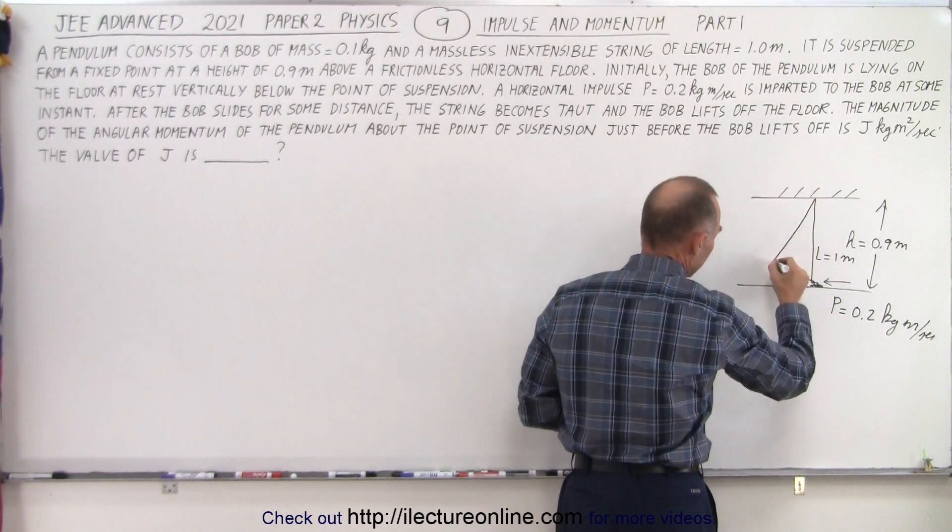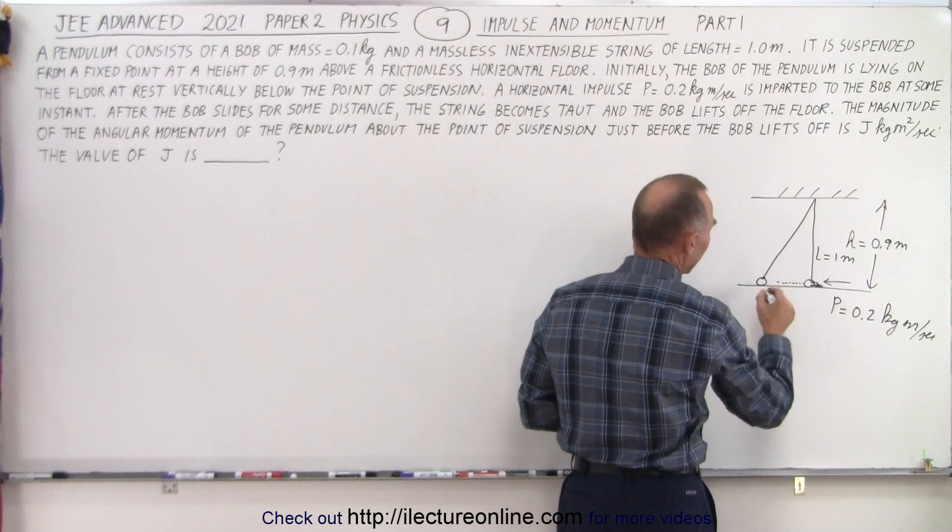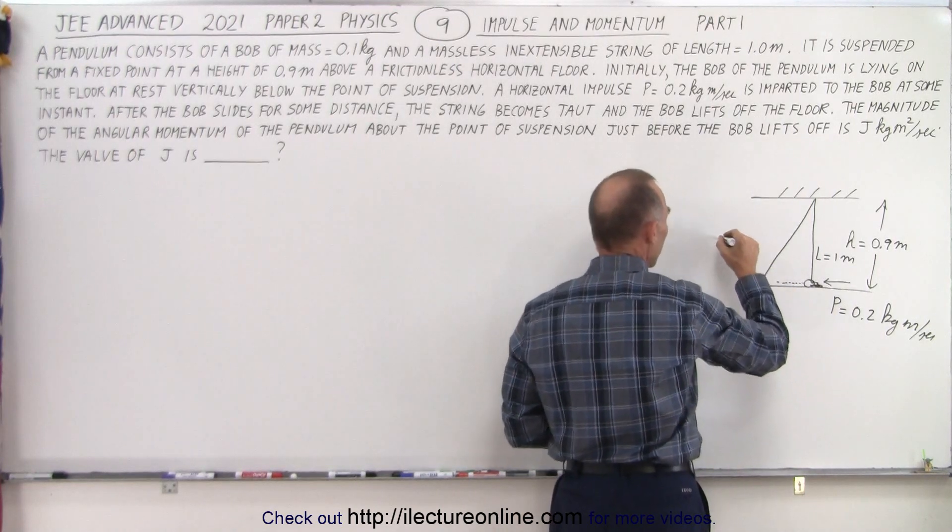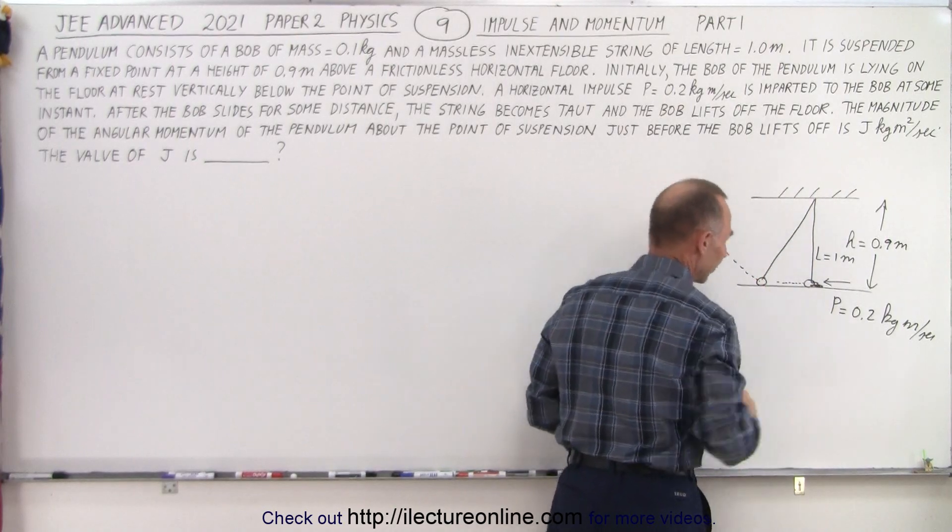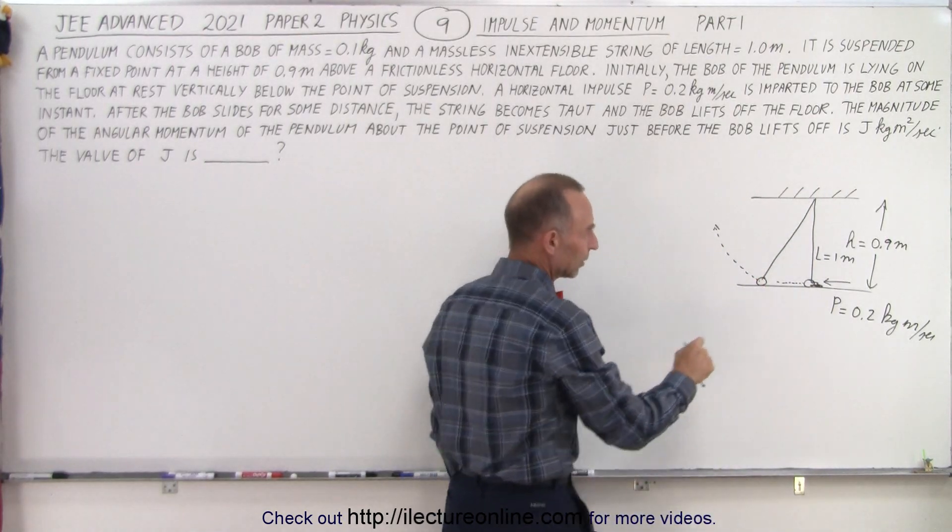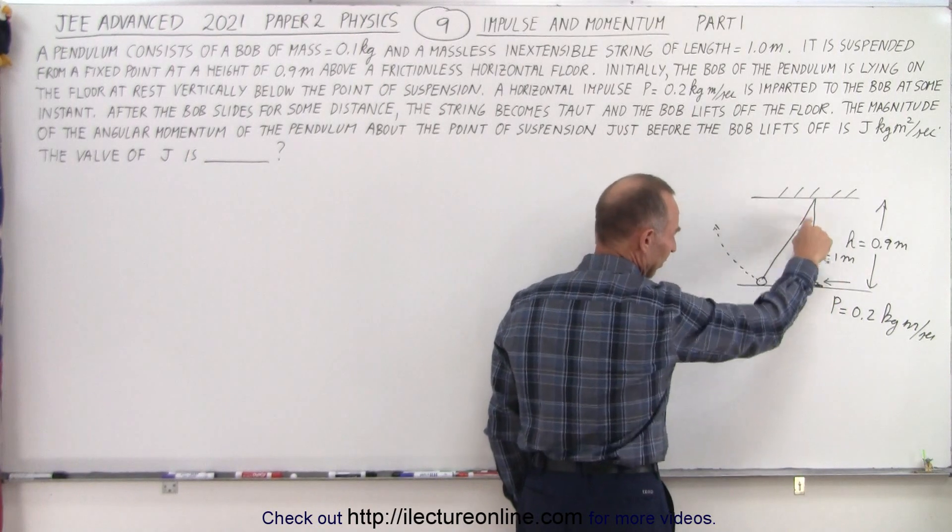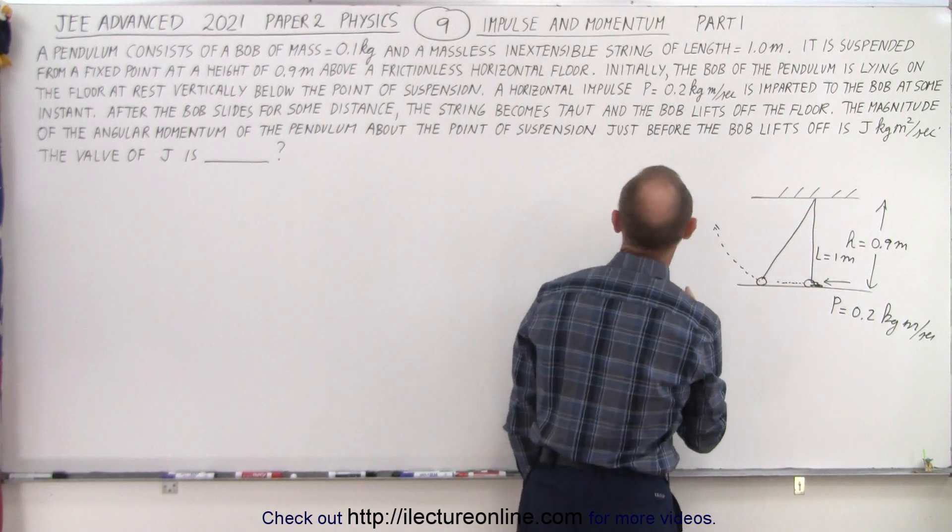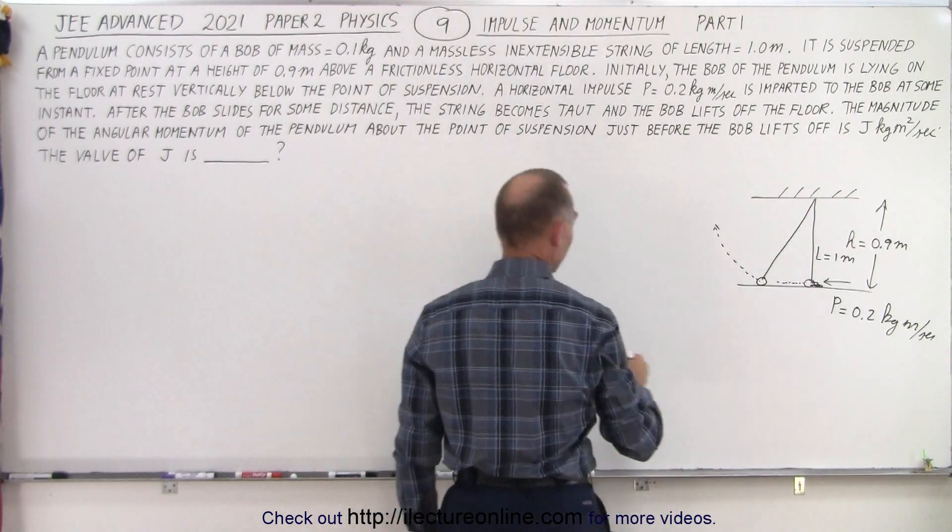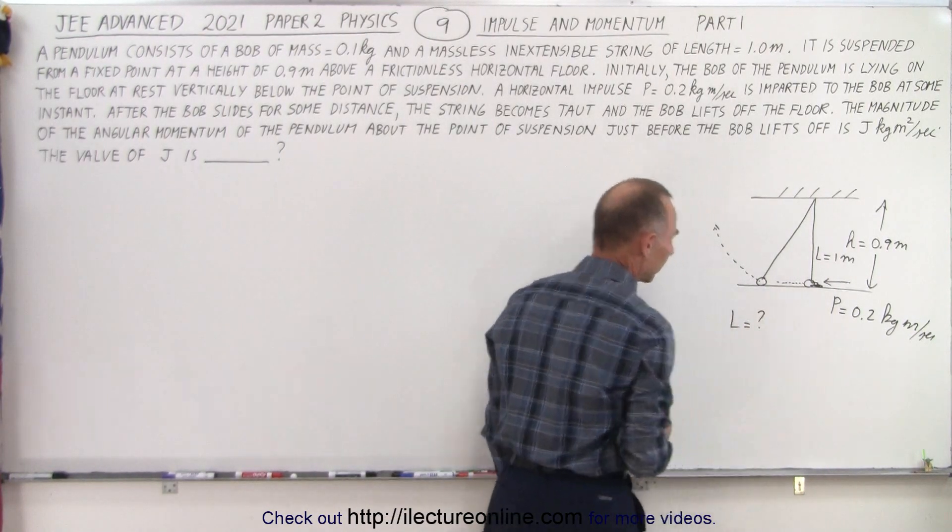At some point the string will be fully extended and then it will continue on in some circular motion. So at that point we have what we would call angular momentum. Until then the string is slowly unraveling until it's completely taut. They want to know the angular momentum of the pendulum. So L equals question mark.